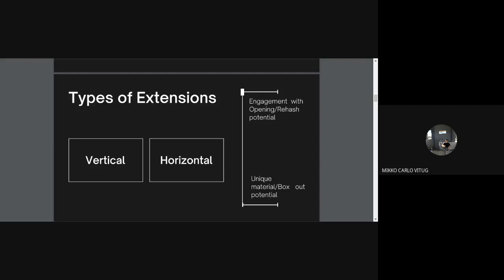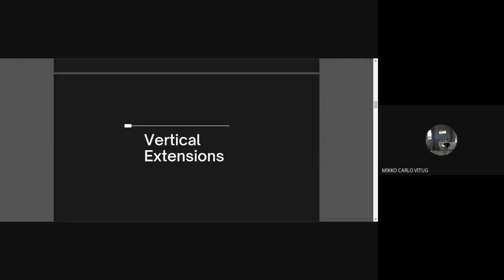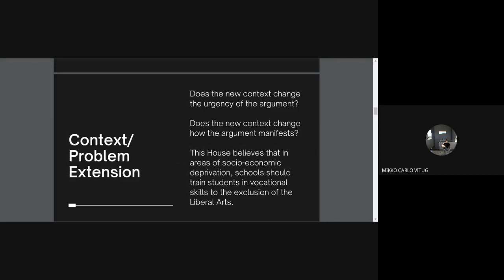Now I'll look at different types of vertical and horizontal extensions, how to do them, and how to position them in the debate. One way to extend vertically is to have a newer context or problem. Does the new context change the urgency of the argument, or does it change how the argument manifests? You only opt for this kind of extension if it actually changes either of these two things — does it make the argument more important, or does it change how the argument works? Otherwise your opening just gets away with the win.